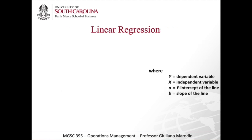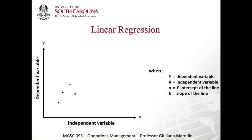In linear regression, we have an equation with an independent variable X, and we want to show how it impacts a dependent variable Y. Looking at this scatter plot, is there a correlation between the independent variable and the dependent variable? Can you see that? If there is a relationship, is it positive or negative, and is it strong or weak?